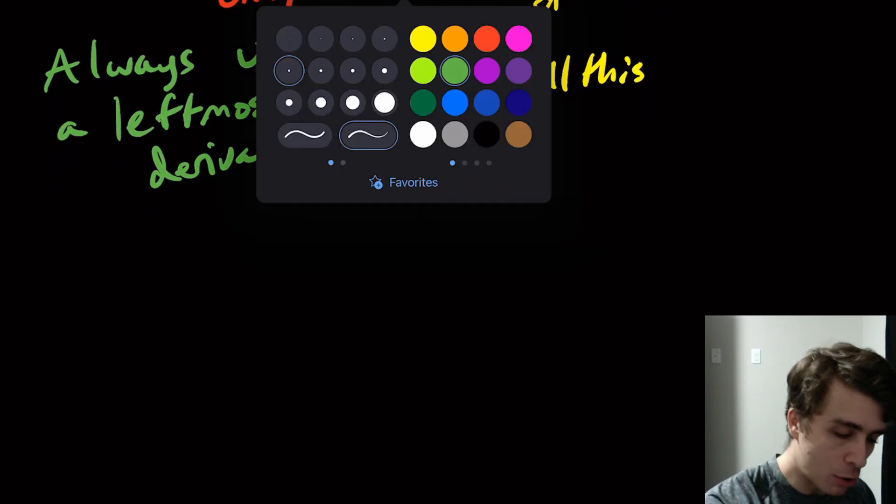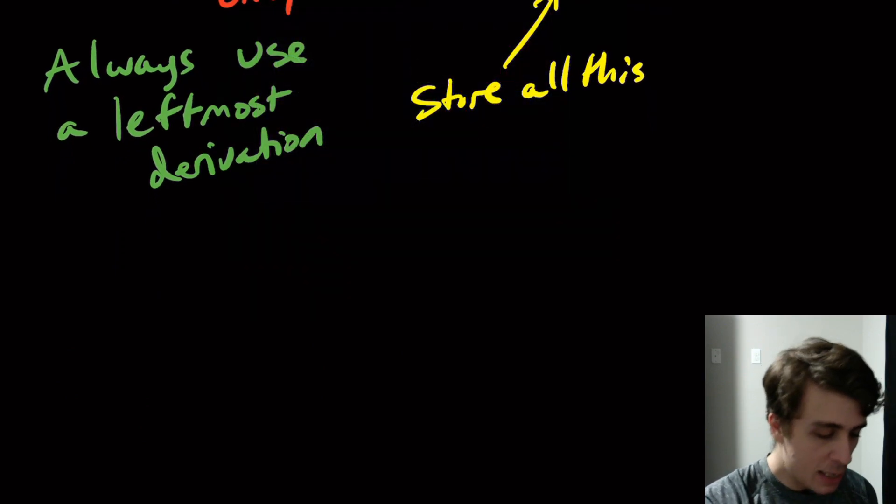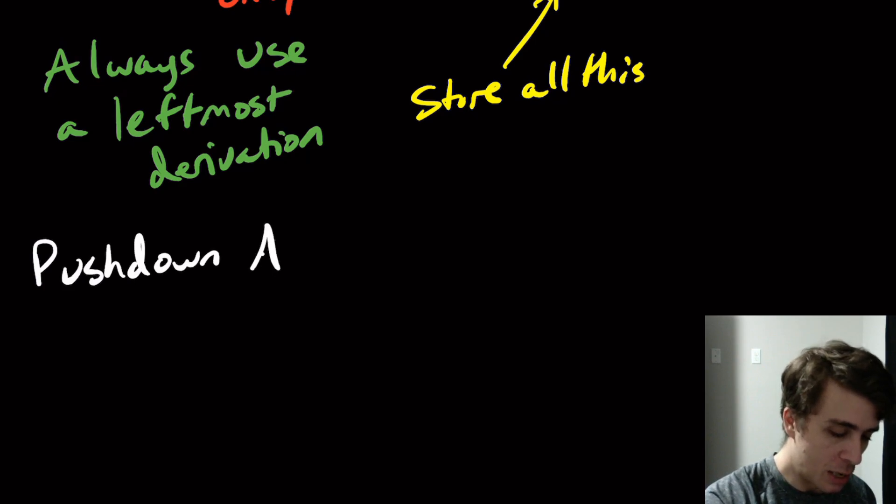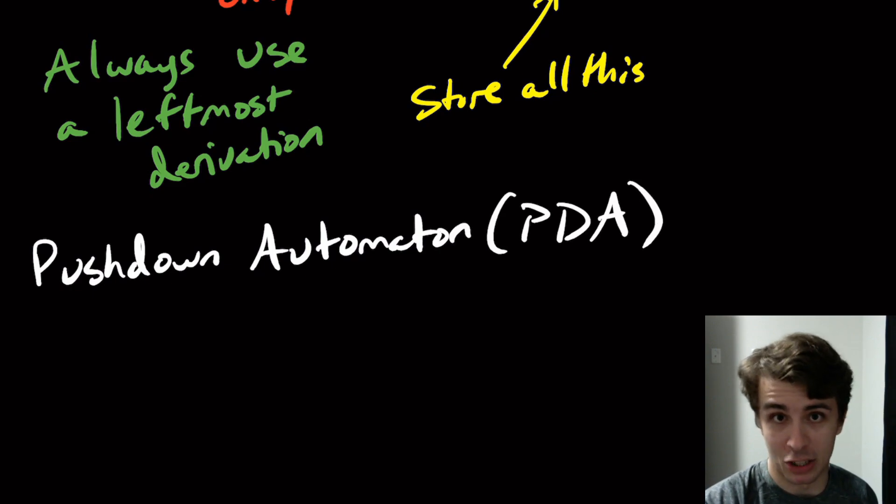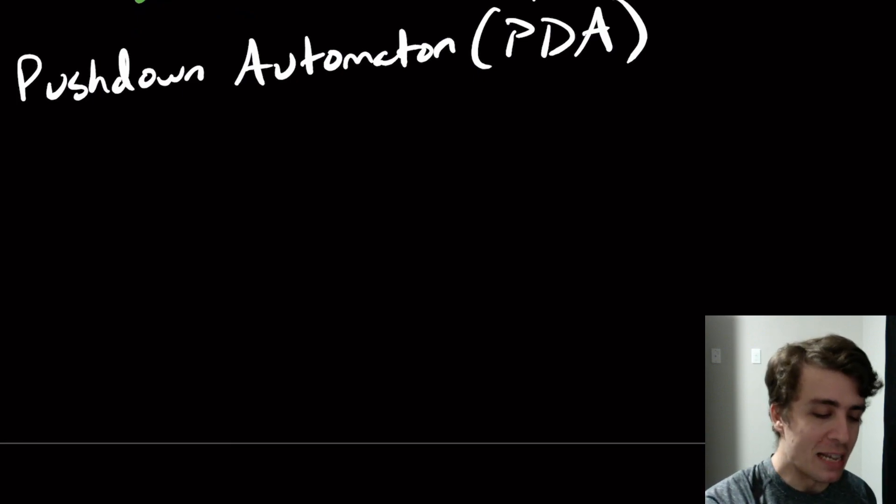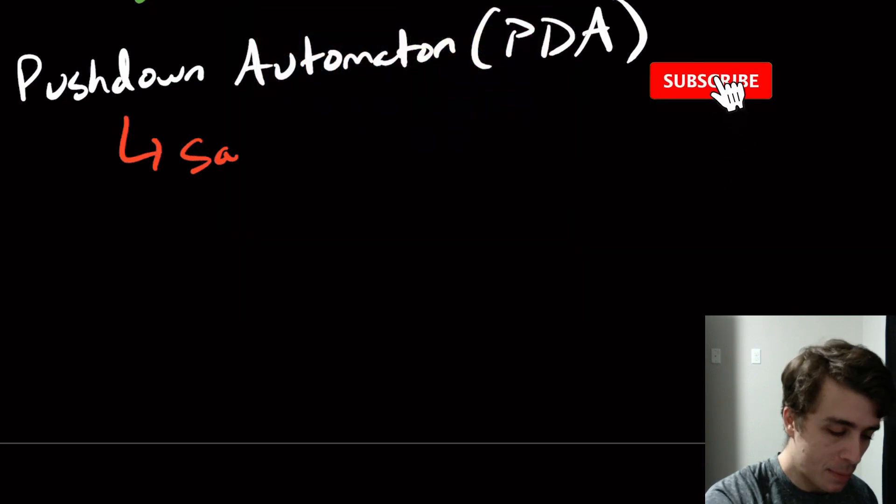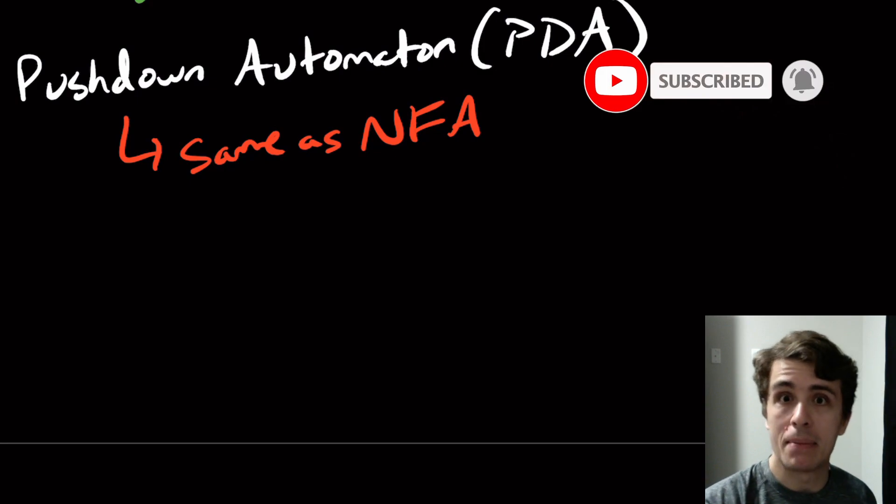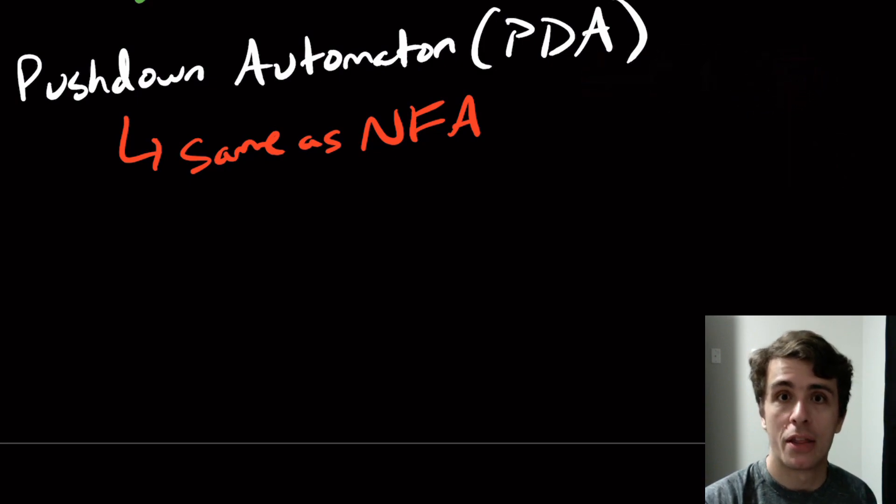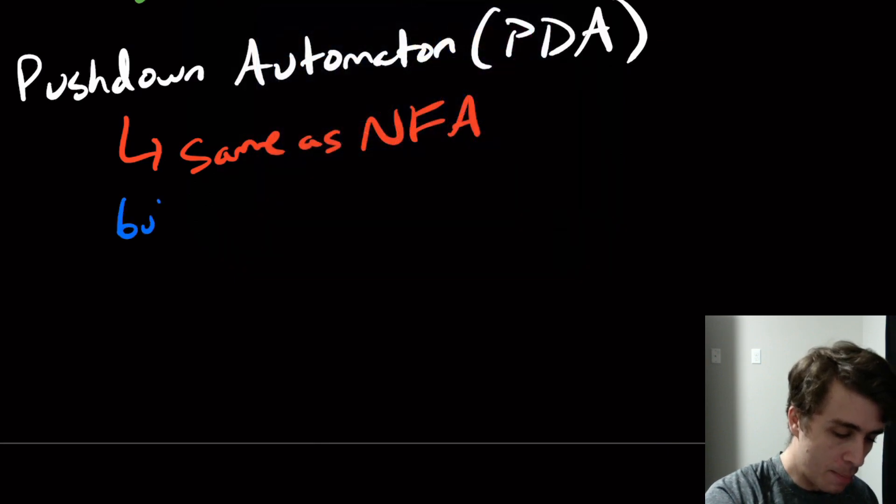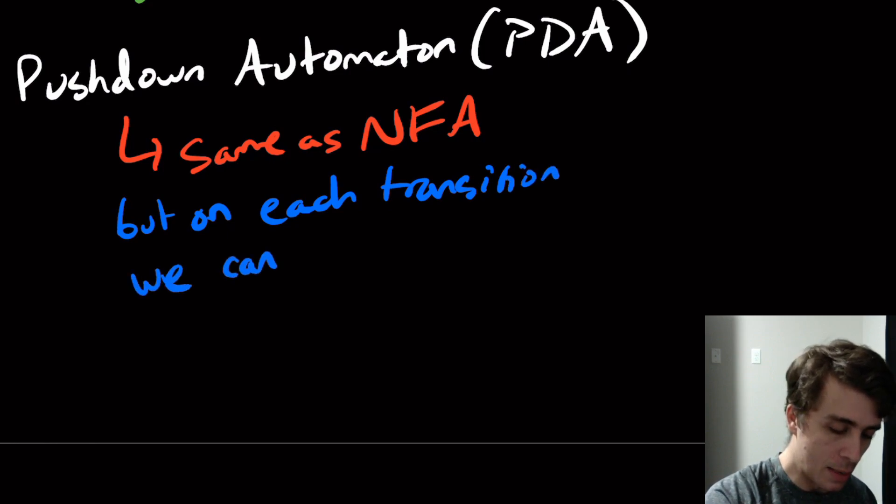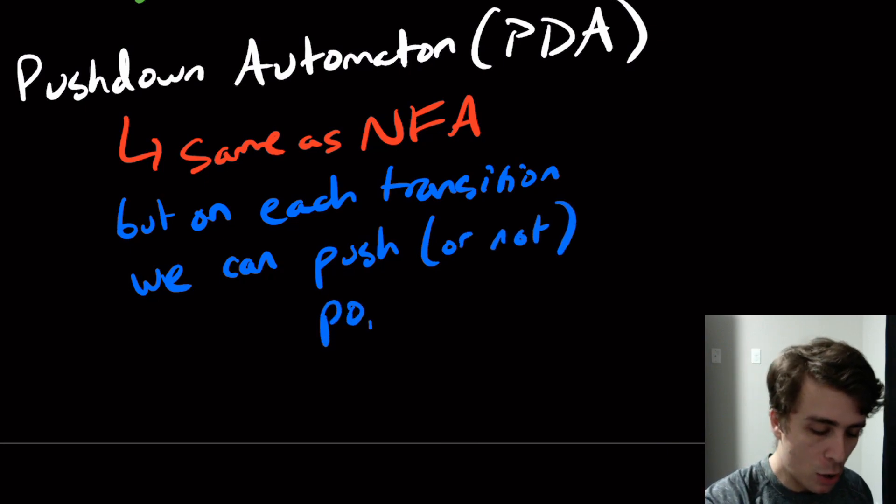The machine that we're going to be talking about from a few videos from now on is something called a pushdown automaton, abbreviated PDA, not public display of affection, although you may want to talk about that more than this probably. But yeah, these are called pushdown automata and they're exactly the same as an NFA except now we're going to have an additional thing built into the transitions. But on each transition we can push or not, we could not push onto a stack. We could pop or not onto the stack.